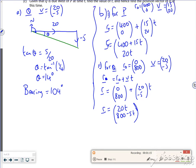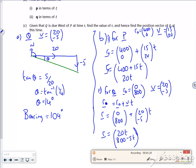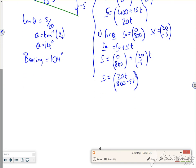Part C says: given that Q is due west of P at time t, find the value of t. So Q is due west of P.